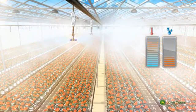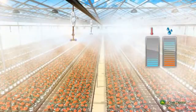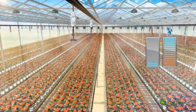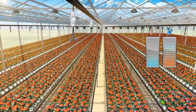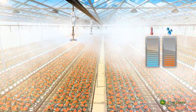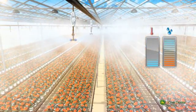The fogger's fine water droplets and low flow rate provide effective cooling for the plants. The foggers help decrease the temperature and increase the humidity in the greenhouse.